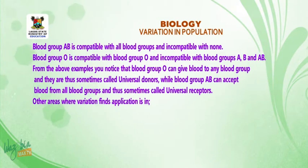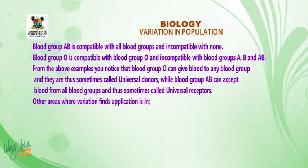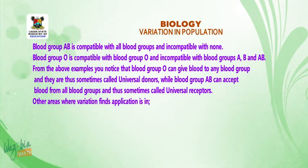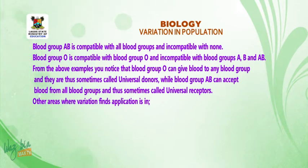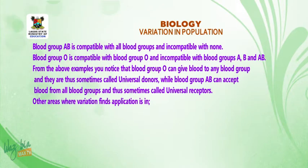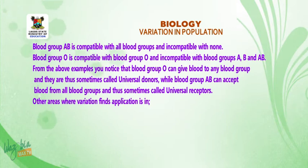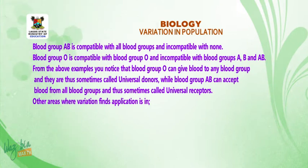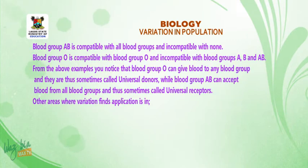Blood group AB is compatible with all blood groups and incompatible with none. Blood group O is compatible with blood group O only and incompatible with blood groups A, B, and AB. From the above examples, you notice that blood group O can give blood to any blood group and is thus sometimes called universal donor, while blood group AB can accept blood from all blood groups and is thus sometimes called universal receptor.